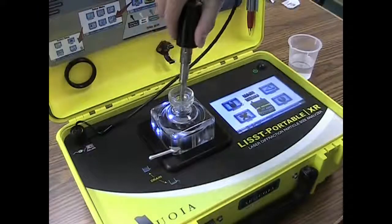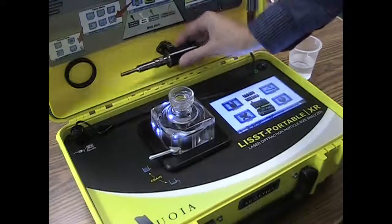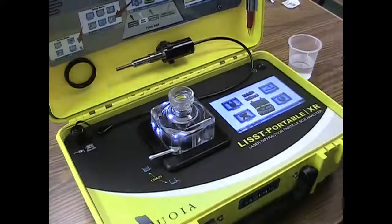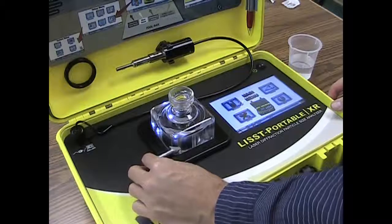Once the sample is well mixed, remove the ultrasonic probe, drain a small amount of water from the chamber, and then pour in your mix of water and particles.